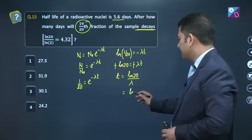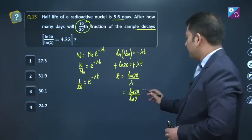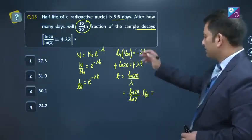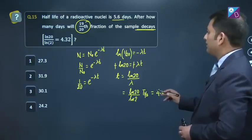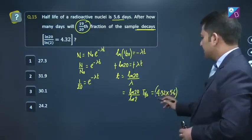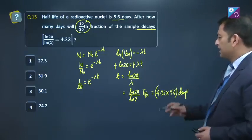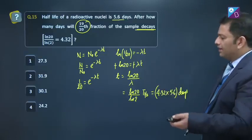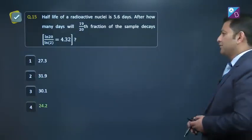By the way, all of you know lambda is natural log 2 divided by half life period. So this becomes ln 20 by ln 2 upon half life. The half life goes here. This value is given in brackets as 4.32 into half life period, that is 5.6 days. So the options are in days. Clearly, 5 times 4 is 20, slightly bigger than 20. So out of all these things, you would get option number 4, 24.2.